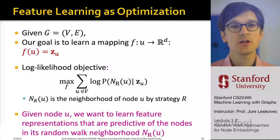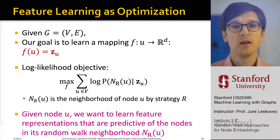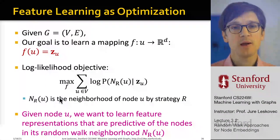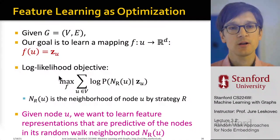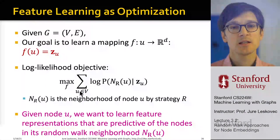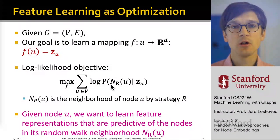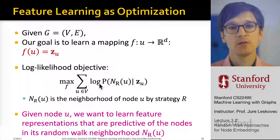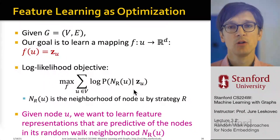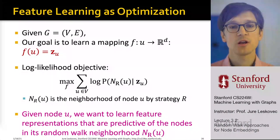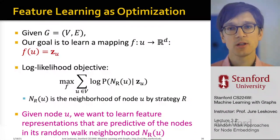How do we set this up as an optimization problem? Given a graph with nodes v and edge set e, our goal is to learn a mapping from nodes to their embeddings by maximizing a maximum likelihood objective. We find the coordinates z of the nodes such that the summation over all nodes maximizes the log probability that nodes appearing in the random walk neighborhood of u are predicted correctly. We want to learn feature representations that are predictive of the nodes that appear in a node's random walk neighborhood.